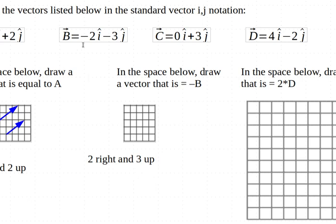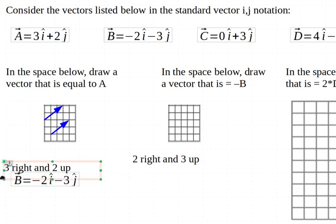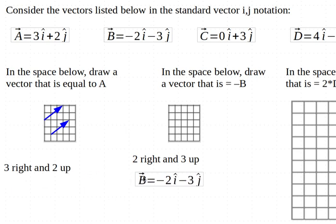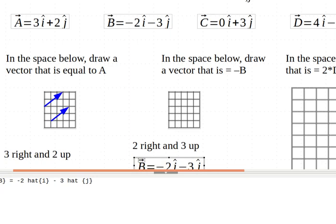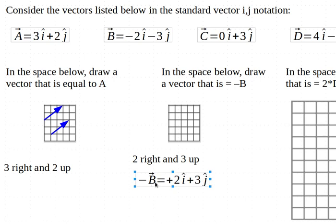You can also think of this as multiplying the entire equation by negative 1. And so my negative vector becomes plus and plus. So negative B is plus 2i hat plus 3j hat, because I reversed both of the components. That shows us I've got 2 right and 3 up.